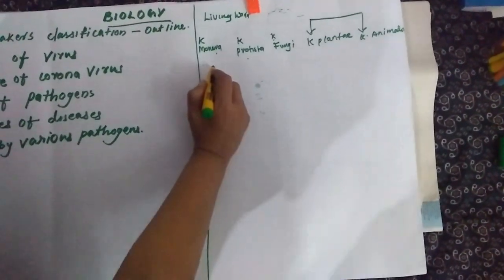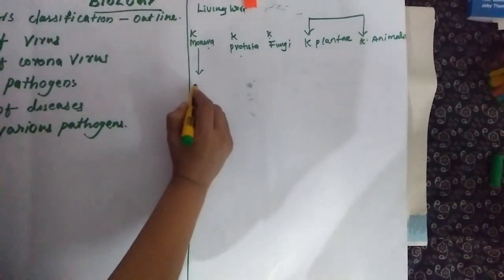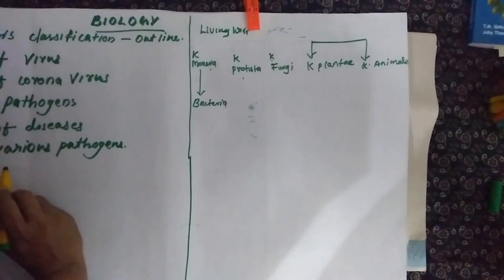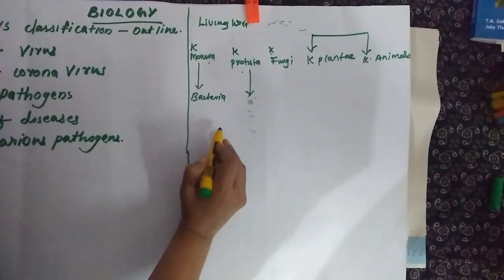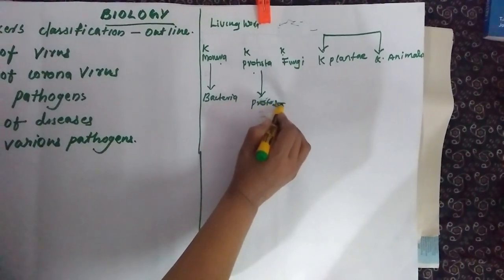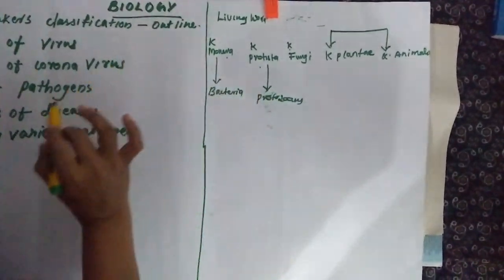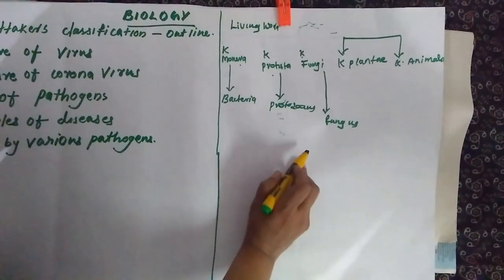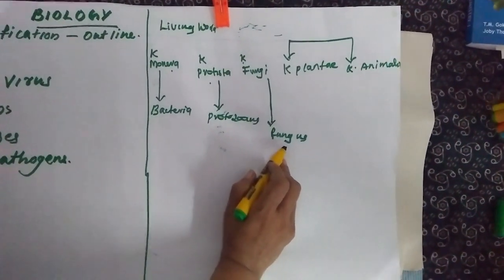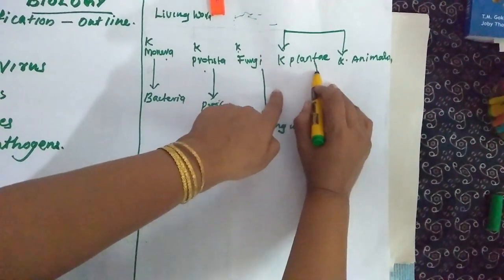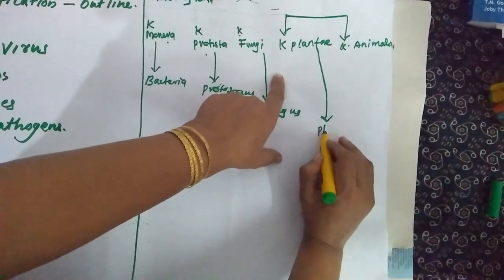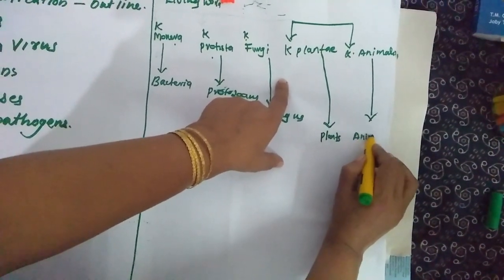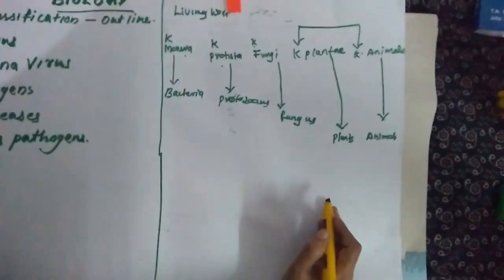Kingdom Monera — the sole members are Bacteria. Bacteria are the sole members of Kingdom Monera. Kingdom Protista includes Protozoans. Kingdom Fungi includes various kinds of fungi such as Ascomycetes, Basidiomycetes, etc. Kingdom Plantae — you all know plants belong to this kingdom. And Kingdom Animalia includes animals.